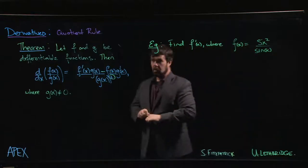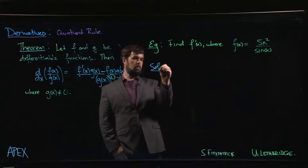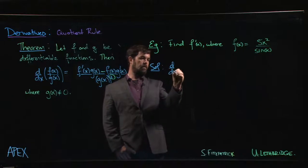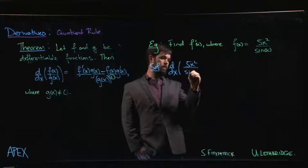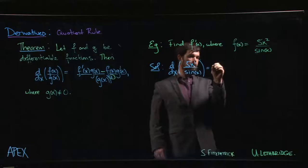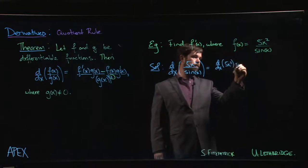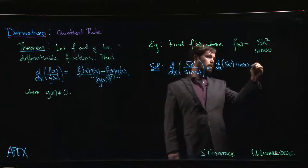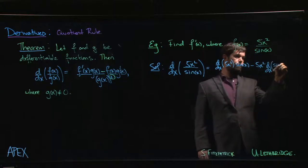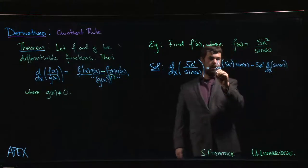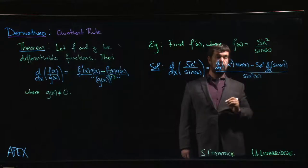So the quotient rule can be understood as follows. The derivative of 5x squared over sine x is going to be the derivative of the top times the bottom minus the top times the derivative of the bottom. And the whole thing is over the bottom squared, sine squared x.